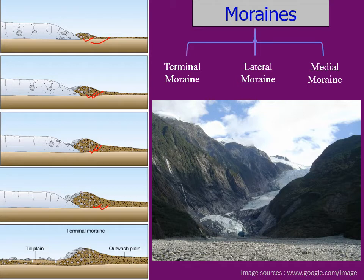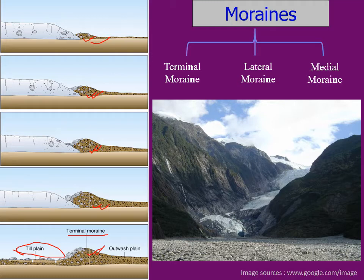After the recession and melting of this glacier, you can see that there is no ice mass remaining, but the moraine remains. This indicates the farthest most extremity up to which glacial activity was recorded. This is known as terminal moraine.